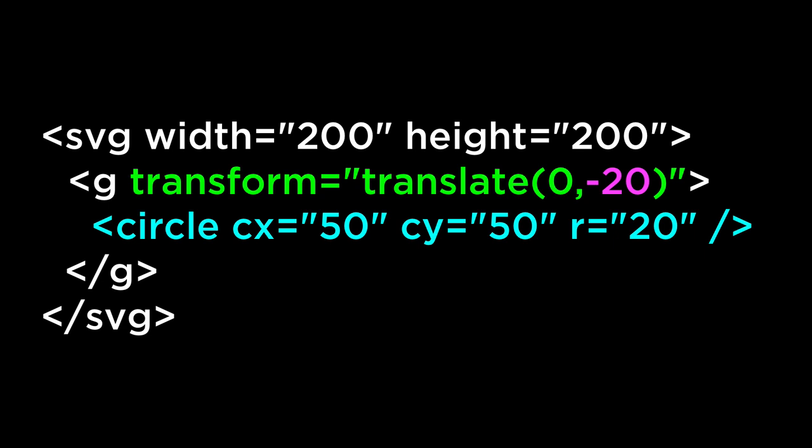In this next example, we have an SVG circle whose center point is at 50,50 and has a radius of 20, inside an SVG group element with a translation applied. The second number in the translation is negative 20. This tells the G element to subtract 20 units from the y-coordinate of all elements inside — meaning subtract 20 units from the CY — which will move the circle up, because the SVG coordinate space has the y-axis inverted.